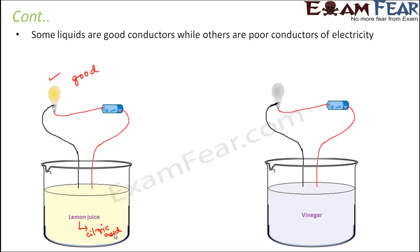Let us take another solution — vinegar. And in vinegar, what do you see? The circuit is completed again, but the bulb doesn't really glow. That's because vinegar is a poor conductor of electricity — it doesn't conduct enough current to make the bulb glow. It is not that vinegar is an insulator; it also conducts current, but it conducts very little current — so little that it is not able to heat the filament of the bulb enough to make it glow. Now instead of the bulb, if you attach something like an LED to the vinegar, then maybe it might start glowing because an LED — a light emitting diode — requires very little current to glow. So this shows that vinegar is a relatively poor conductor of electricity.